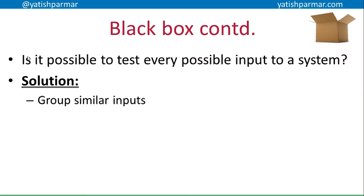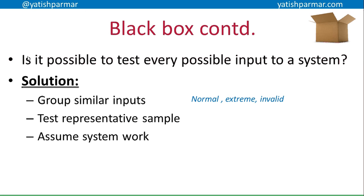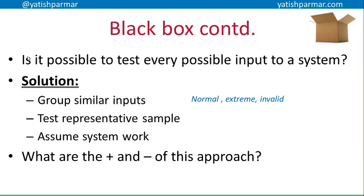The solution is basically to group similar inputs together. You may remember normal, extreme and invalid data - normal being the data you expect in normal operation, extreme being data at boundary values, and then invalid data being data that is not acceptable. You test a representative sample, and if that sample of the data group has the expected outcomes, you therefore assume that the system functions as intended. The tester usually is not the person that coded the system, so they can often find bugs that the coder didn't come across because they're not biased in their approach to testing.